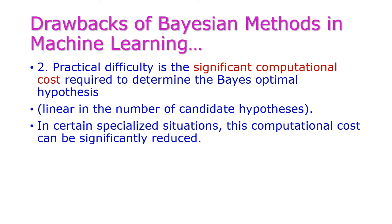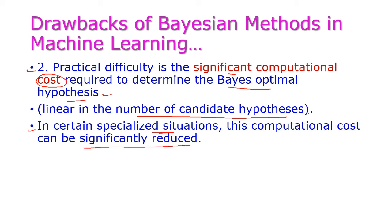The second important drawback is the significant computational cost required to determine the Bayes optimal hypothesis, which is linear in the number of candidate hypotheses. However, in certain special situations, this computational cost can be significantly reduced.